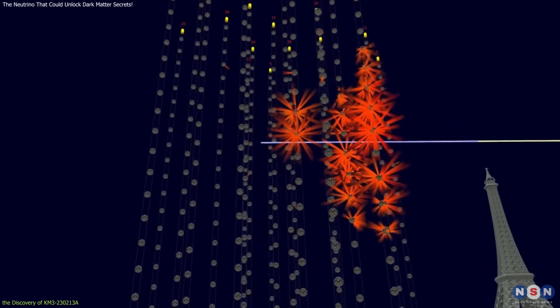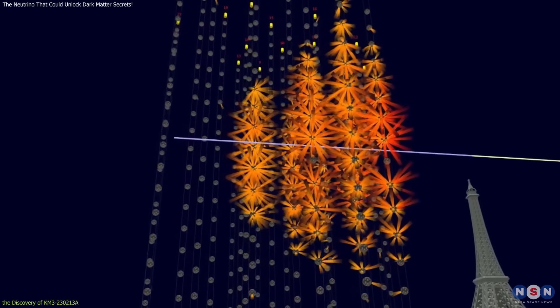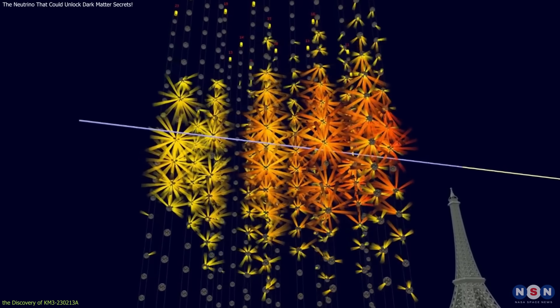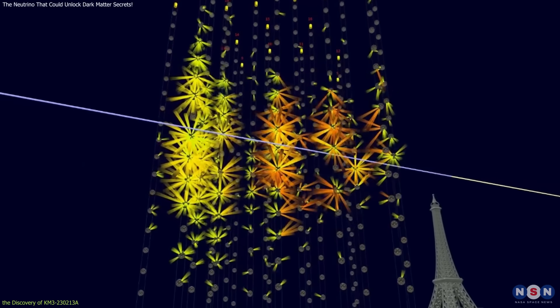In this case, the neutrino produced a muon that traveled through the detector, setting off signals in over one-third of the active sensors.